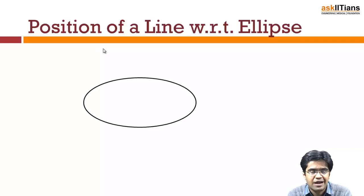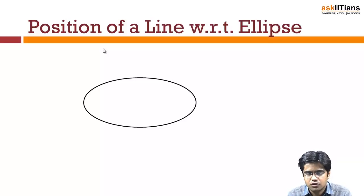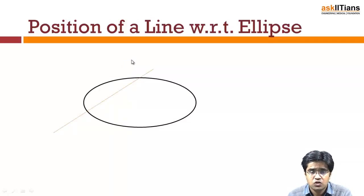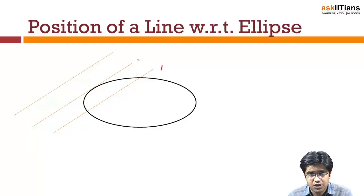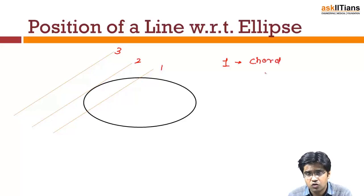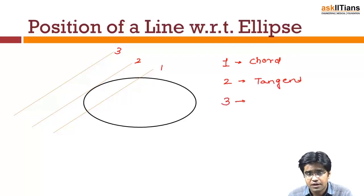Different curves and lines can interact in different manners. For example, a straight line can be a tangent to the curve, can be a chord to the curve, or they may not interact. The first case is when the line intersects the curve at two points — that is called a chord. The second case is when the line just touches the curve — we know this case is a tangent. The third case is where a line neither touches nor intersects. In the first case the line is a chord, in the second case it is a tangent, and in the third case there is no interaction.